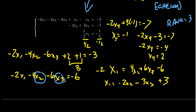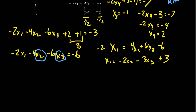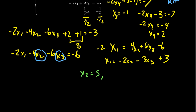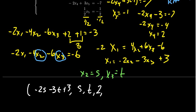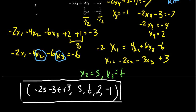Dividing by negative two gives x1 equals negative 2x2 minus 3x3 plus 3. Let x2 equal s and x3 equal t. Our general solution is: x1 equals negative 2s minus 3t plus 3; x2 equals s; x3 equals t; x4 equals 2; x5 equals negative 1. There are two free variables, and we solved this system using back substitution and Gaussian elimination. We can always solve systems of equations using this technique.